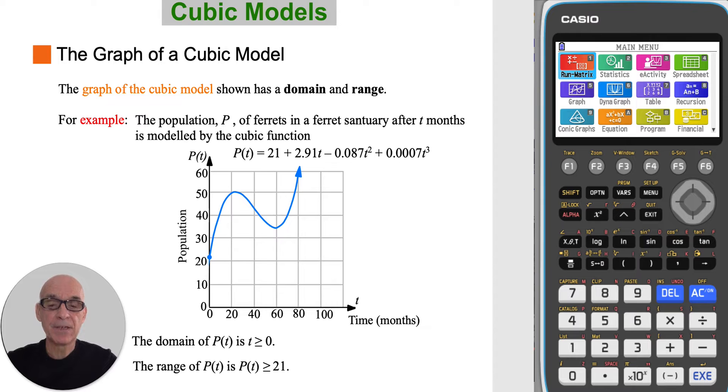So the domain of p is t is greater than or equal to 0. And the range of p is p of t is greater than or equal to 21.